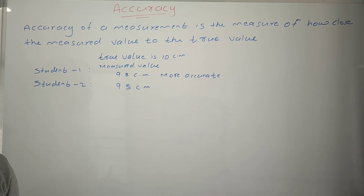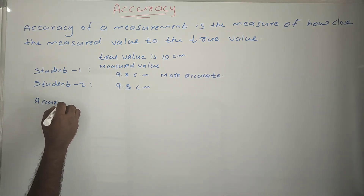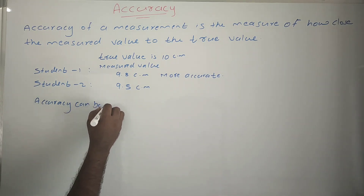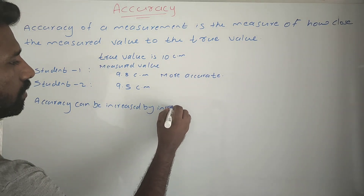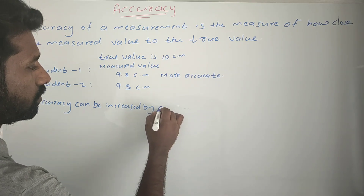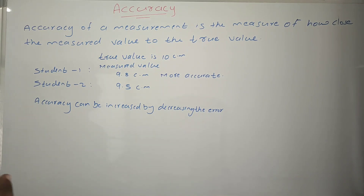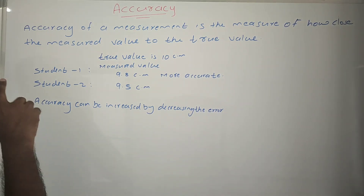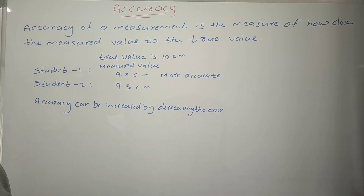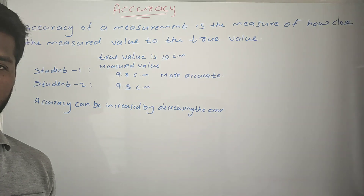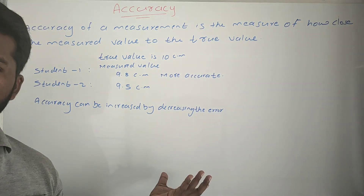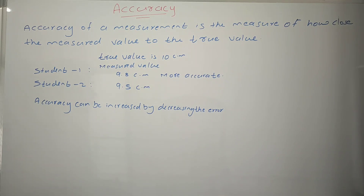How can we increase the accuracy of a measurement? Accuracy can be increased by decreasing the error. The person has to take care about the measurement and use very good devices. Then we can get an accurate measurement with less error. Error is the uncertainty in a measurement — it is the difference between the true value and the measured value.